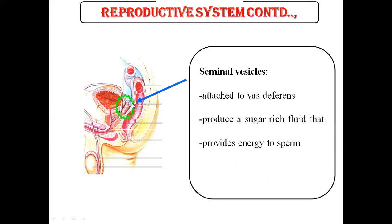Looking at the diagram here, this is the seminal vesicle, which connects to the vas deferens and produces a sugar-rich fluid that provides energy to sperm. This is all about the seminal vesicle and their functions.